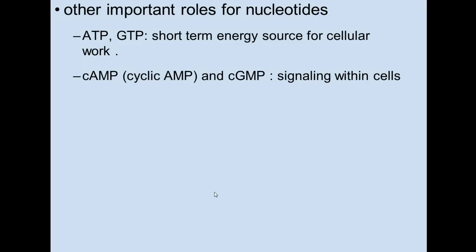There are other important roles for nucleotides. ATP and GTP are short-term energy sources for cellular work. You're probably familiar with ATP as an energy source. GTP is also an energy source, but they're not interchangeable — certain cellular reactions require GTP, and most require ATP. For the ones that require GTP, there has to be GTP.